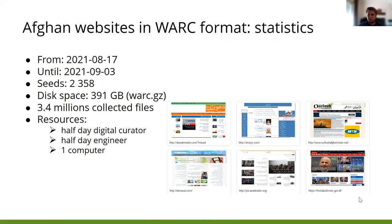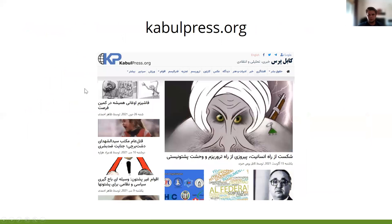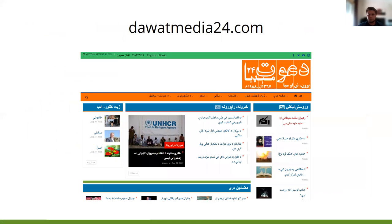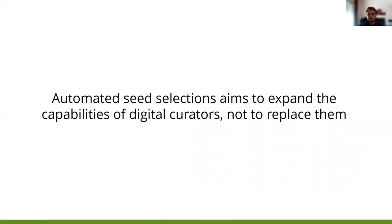Some numbers about the collection: this collection runs from 17 August 2021 until 3 September 2021. We stored 391 gigabytes of information corresponding to 3.4 million collected files. The resources used were half a day of a digital curator, half a day of an engineer, and one computer, for 2,000 seeds. This is not perfect, but we were able to do this with limited resources and in a short amount of time.